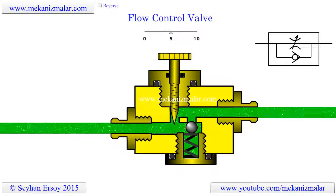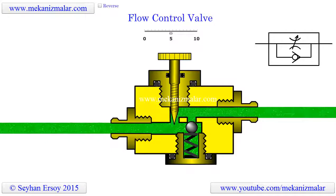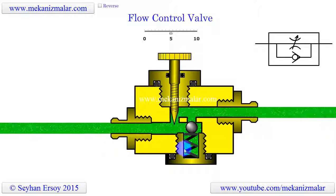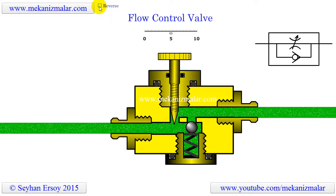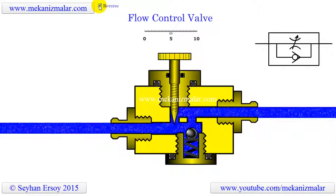You can solve this problem by adding a quick exhaust valve at the inlet port of your cylinder. The other solution is to put a check valve in tandem with a needle valve, such that the check valve will be open in the return stroke of the piston. The uncompensated flow control valve we are going to describe here is actually a repackaging of the needle valve and check valve combination in a single valve.